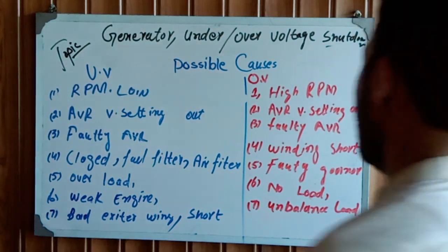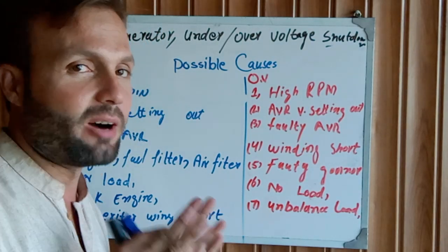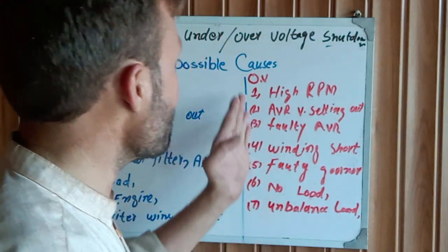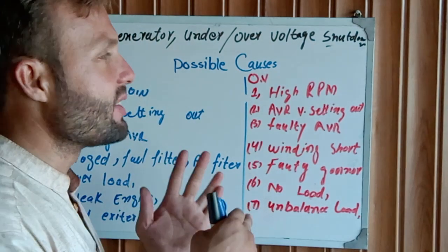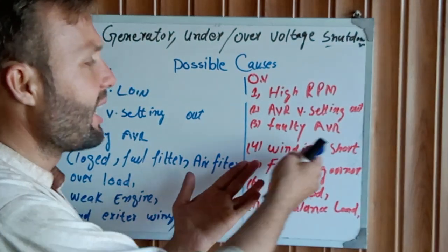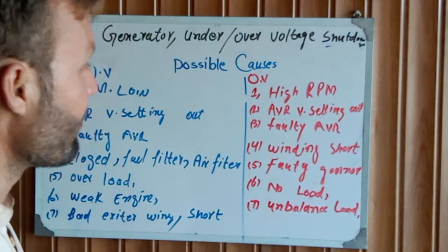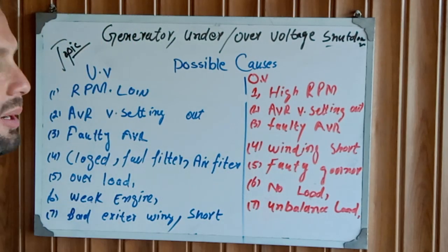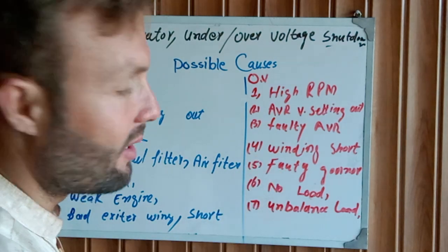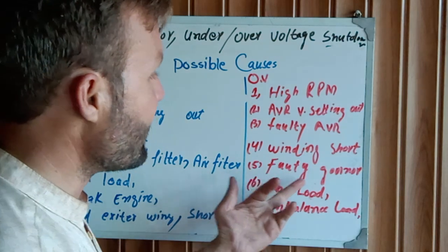Another cause of over voltage is a faulty AVR. If your AVR is malfunctioning or is a bad AVR, this means your voltage is raising uncontrollably. Swap it out — install a new one and check the problem.